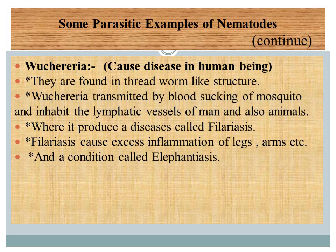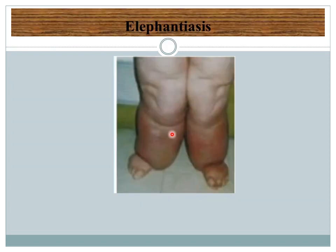Another parasitic example is Wuchereria, which causes a disease in human beings known as filariasis, and that condition leads to elephantiasis. Wuchereria is a thread-worm-like structure transmitted by blood-sucking mosquitoes. It inhabits the lymphatic vessels of humans and animals, producing filariasis. Elephantiasis involves inflammation of the legs, arms, and other body parts. This figure shows the condition of elephantiasis — inflammation of legs due to filariasis — because the lymphatic system is affected by Wuchereria.